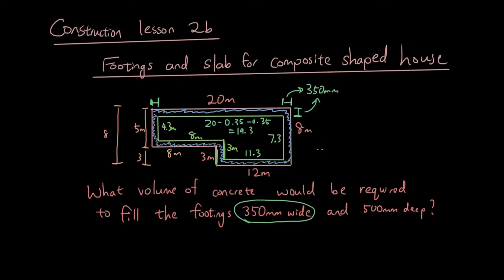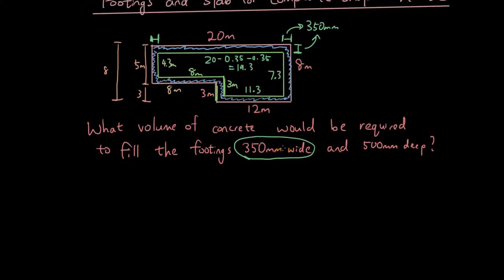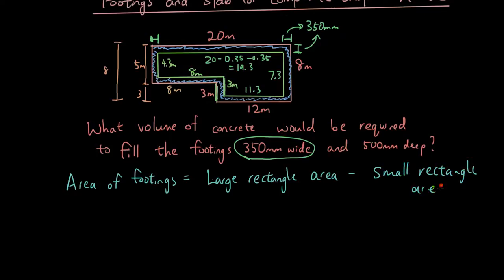Okay. So now in order to find the area, so the shaded area. The area of footings. Right? It's going to equal the large rectangle area minus the small rectangle area. Okay.